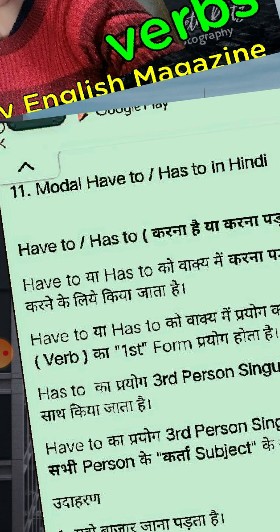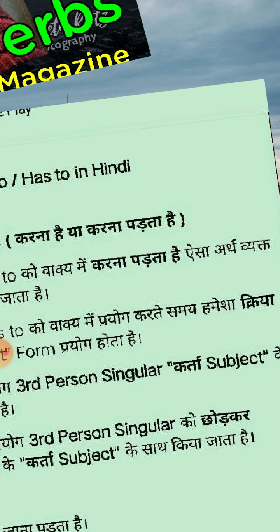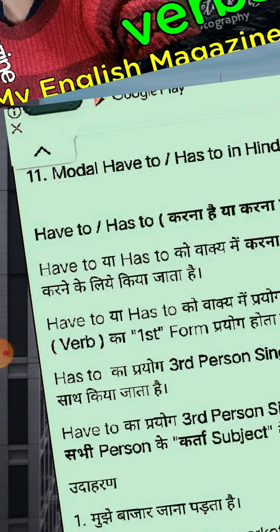अब singular कौन से हुए? He, she, it, that, this. And have to का use किया जाता है third person को छोड़ कर — means हम third person के साथ नहीं करेंगे, बाकि सभी person के साथ और plural के साथ.